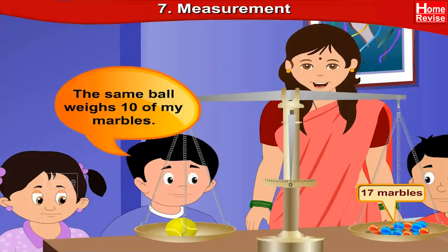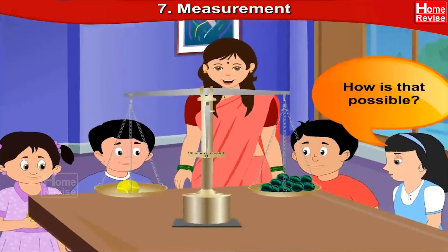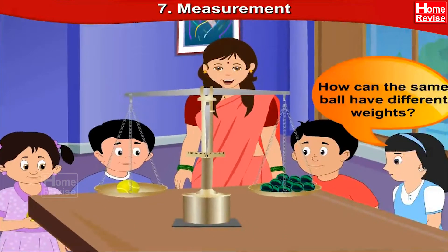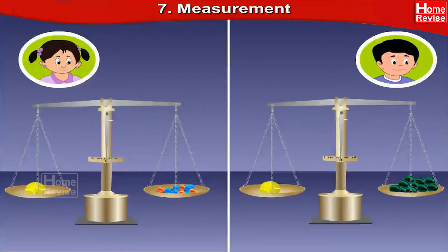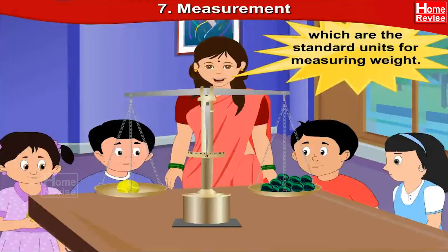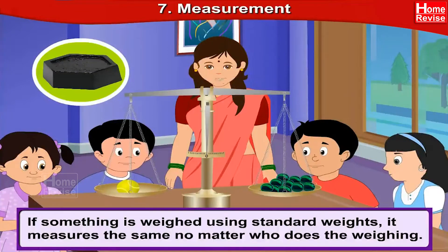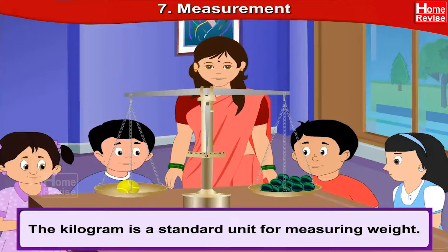But I have different kinds of marbles. The same ball weighs 10 of my marbles. How is that possible? How can the same ball have different weights? The marbles that Sonu brought were smaller than the marbles that Nandu brought, and that's the reason for this confusion. That's why shops keep weights, which are the standard units for measuring weight. If something is weighed using standard weights, it measures the same no matter who does the weighing. The kilogram is the standard unit for measuring weight.